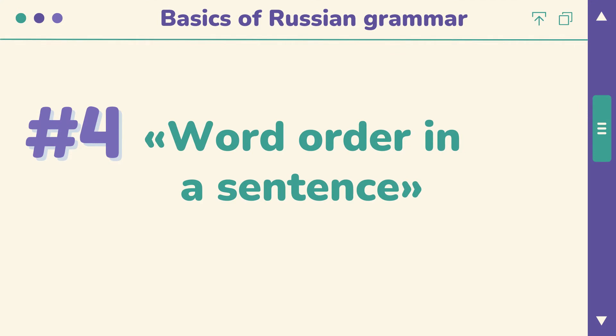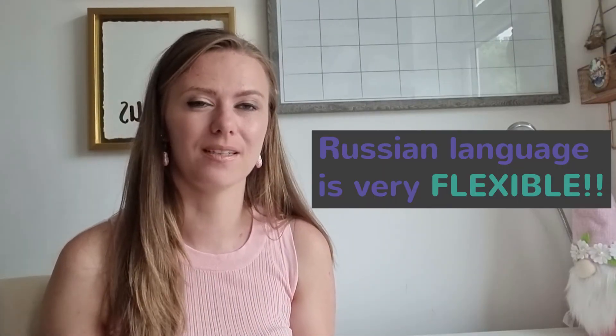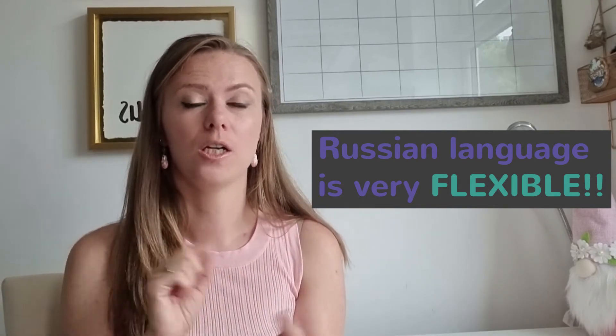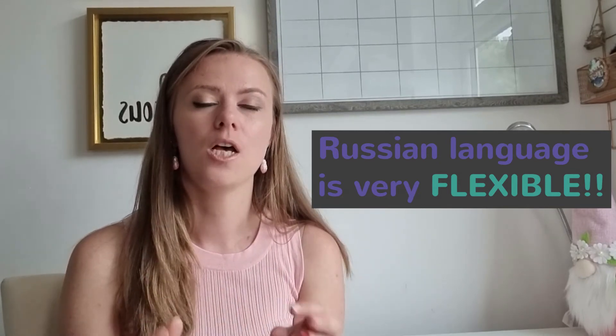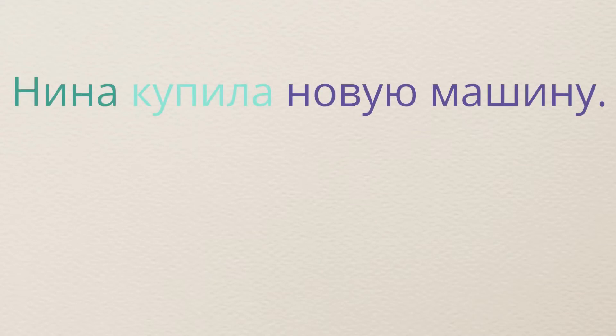The fourth category is word order in Russian, and I have some good news: word order in Russian is quite flexible, which means you can mix and match words around a sentence without affecting its meaning. In English, word order is fixed — changing it changes the meaning. That does not apply to Russian. For example, in the sentence 'Нина купила новую машину' — Nina is the subject, 'купила' is the verb, 'новую машину' is the object.